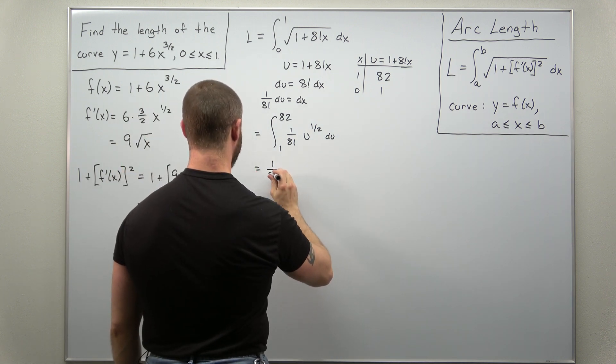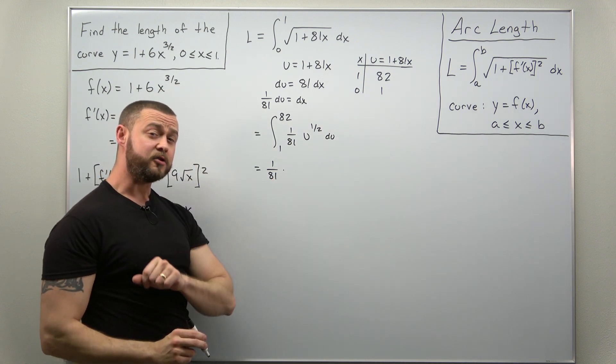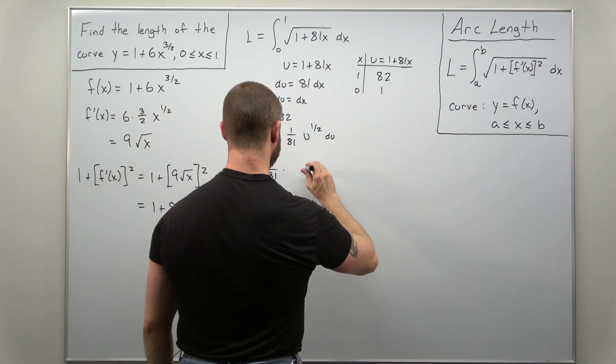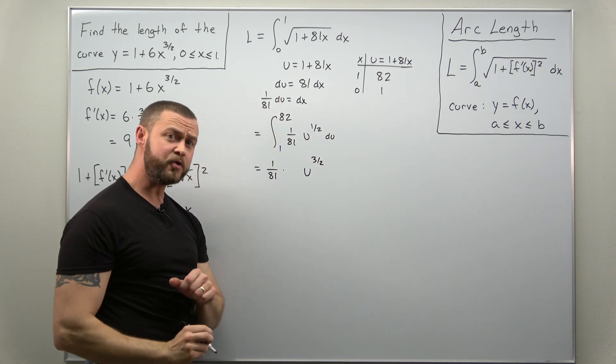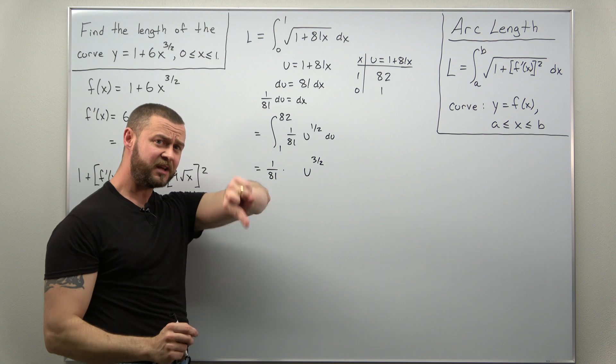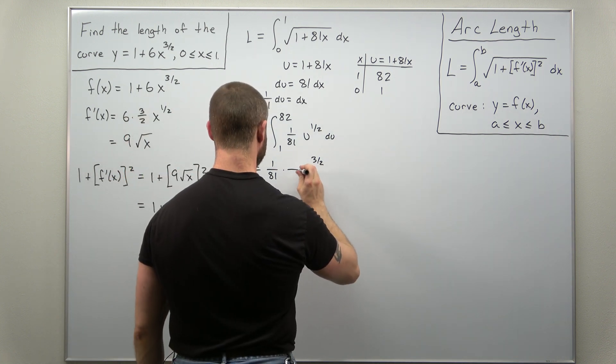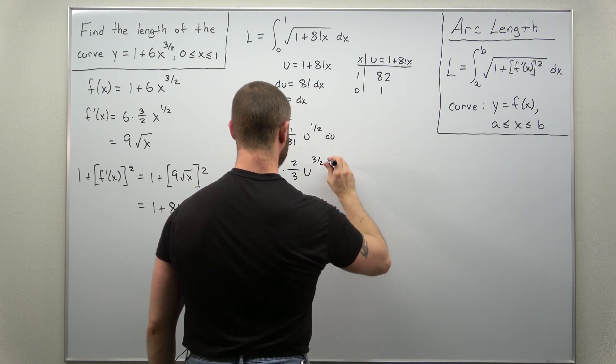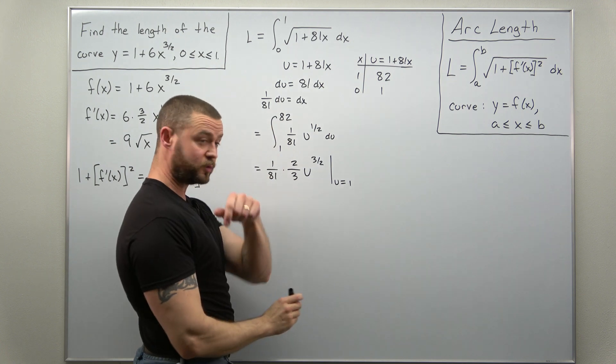We have our factor of 1 over 81. Add 1 to that power, you'll get u to the three halves. Divide by the new power, divide by three halves. Same thing as multiplying by the reciprocal, two thirds. And we just evaluate that now from u equals 1 to u equals 82.